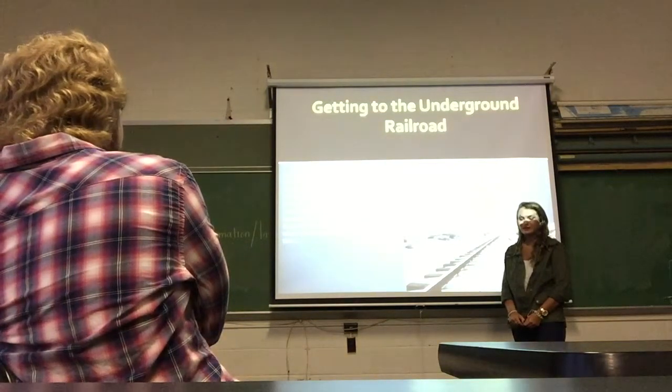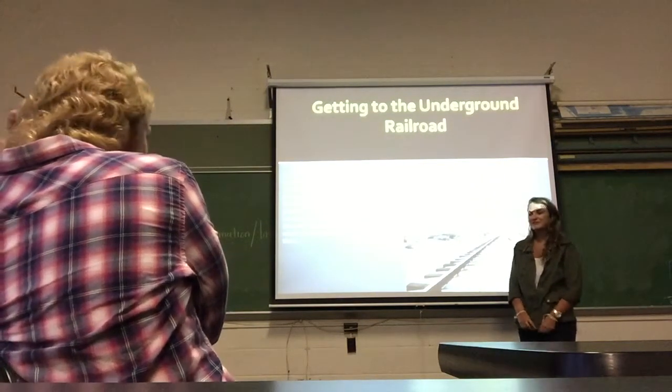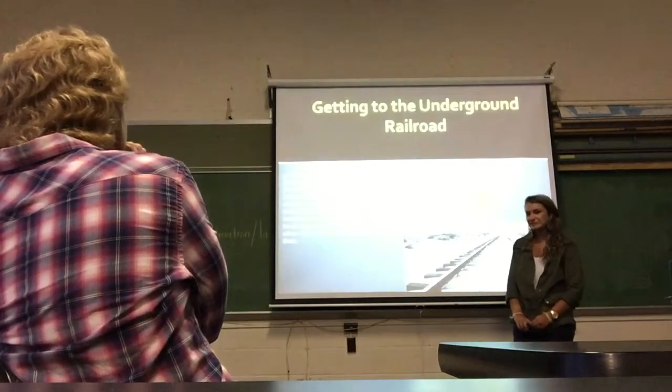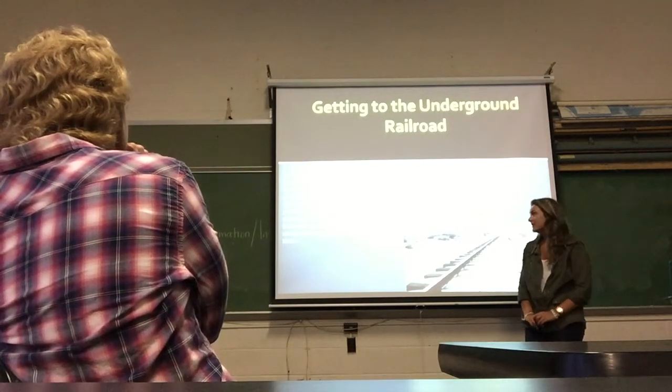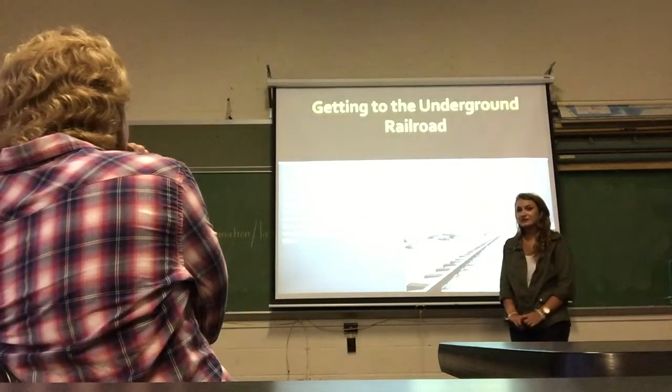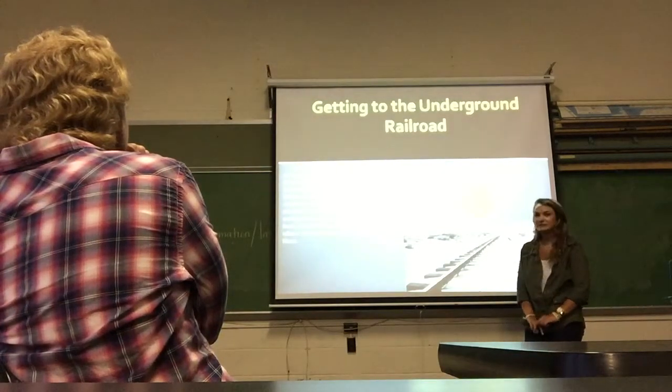The first step on their trip to the Underground Railroad was escaping the slave owners. This could be very difficult because the slave owners were really strict. If they were caught even trying to escape, they could be punished very severely by being whipped, beaten, or even killed.